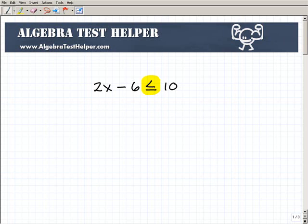All right, so 2x minus 6 is less than or equal to 10. So the first thing I want to do is proceed as if I was solving for x. So I'm going to add 6 to both sides of the equation, and that's going to get me 2x.